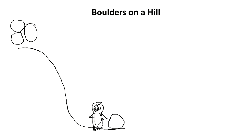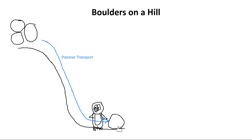Passive transport. It did not take energy. It doesn't take energy for the rock at the top of the hill to roll down into the valley — gravity does the work for us. This rock naturally wants to roll down. No energy required for the rock to go from the top of the hill where there's a bunch to the bottom where there's not a lot.